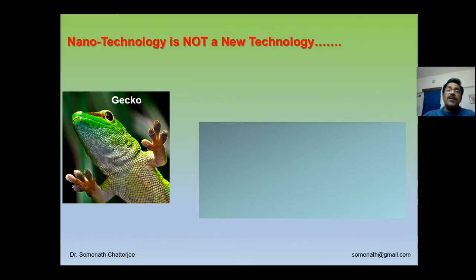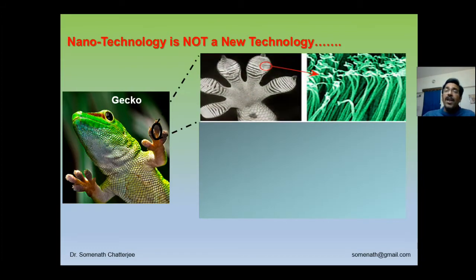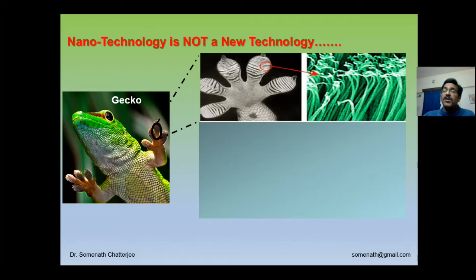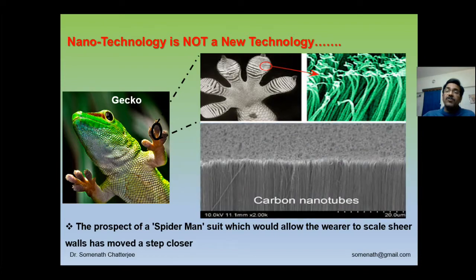Another example showing that nanotechnology is not entirely new is the gecko. When geckos walk on walls and floors, we previously thought there was some suction pad or vacuum mechanism involved. But that is not the case. They have many tiny denticles on their feet, and they press those denticles into the pores of the wall surface. This is actually analogous to the carbon nanotube concept, which we will discuss in the course.